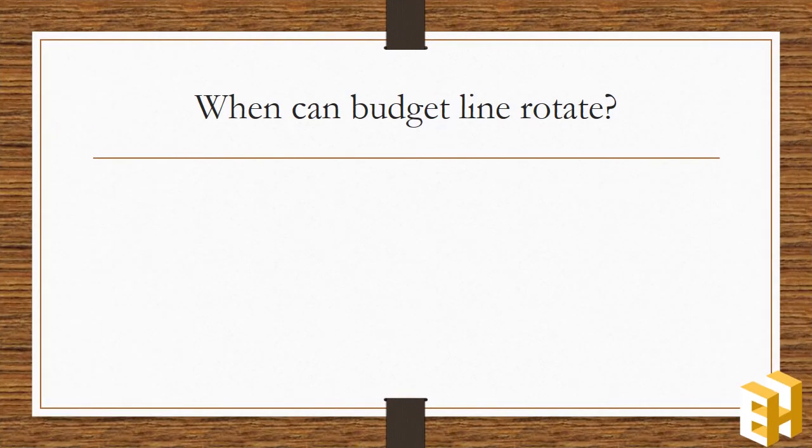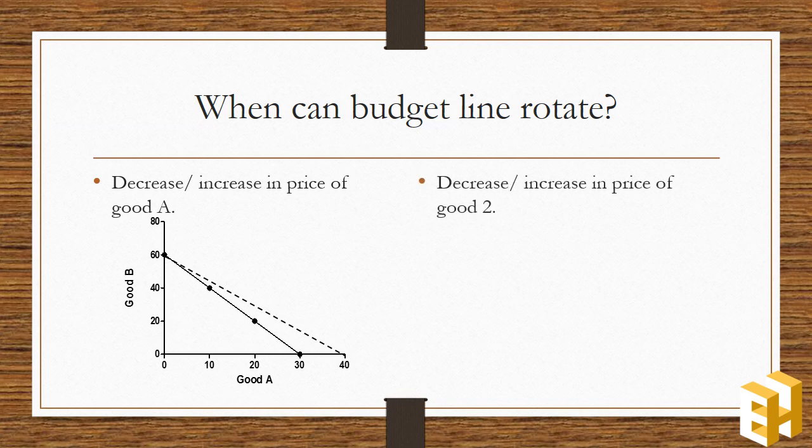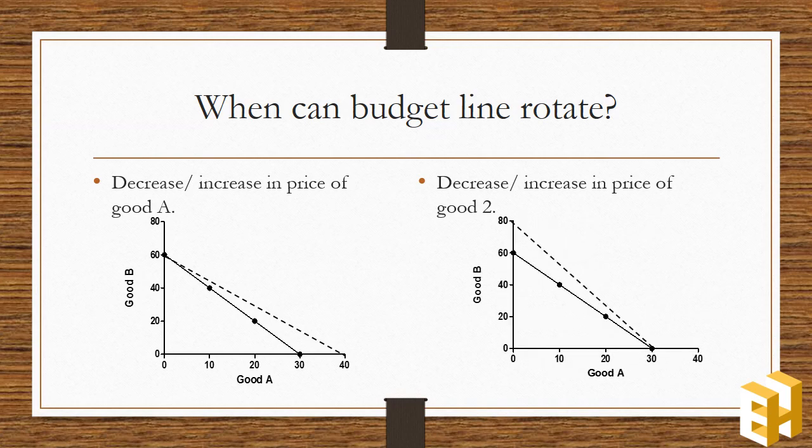The movement of a budget line can take place when there is a decrease or increase in the price of good A. The diagram shows the decrease in the price of good A, or decrease or increase in price of good B. And the diagram shows the decrease in the price of good B.